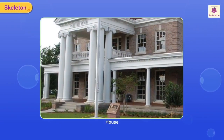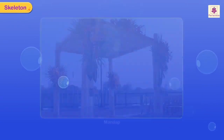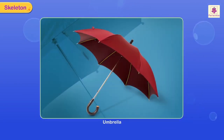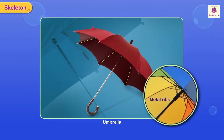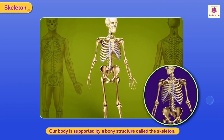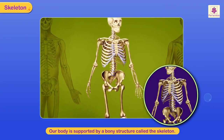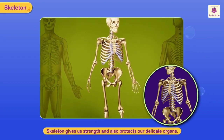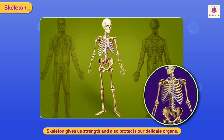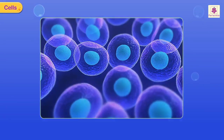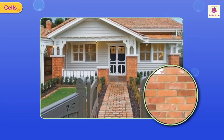Just as a house is supported by concrete pillars, a mandap is supported by a bamboo structure, and an umbrella is supported by metal ribs, similarly our body is supported by a bony structure called the skeleton. It gives us strength and also protects our delicate organs.